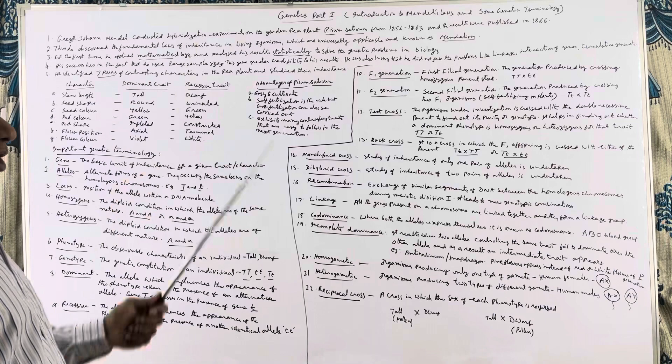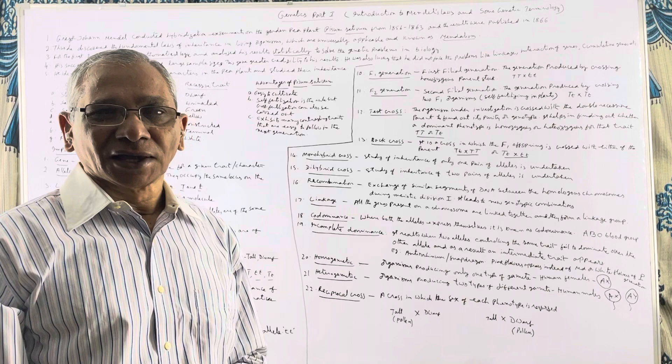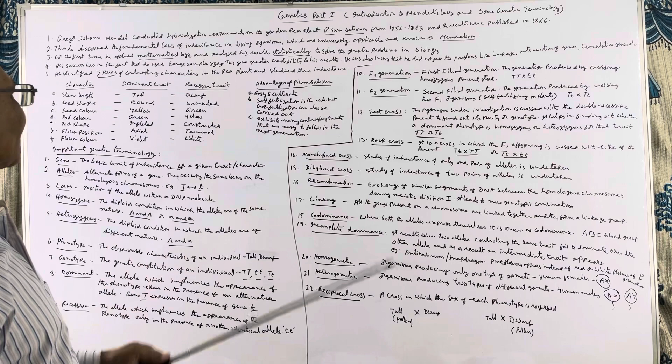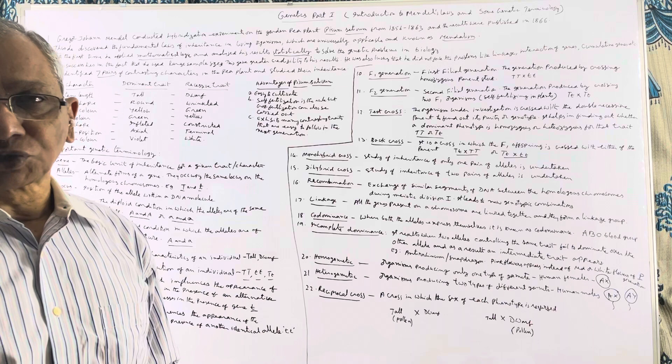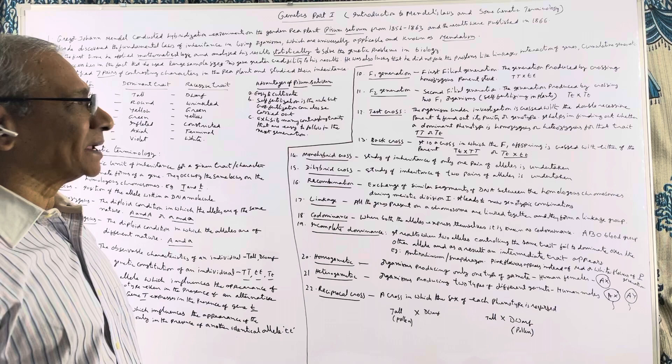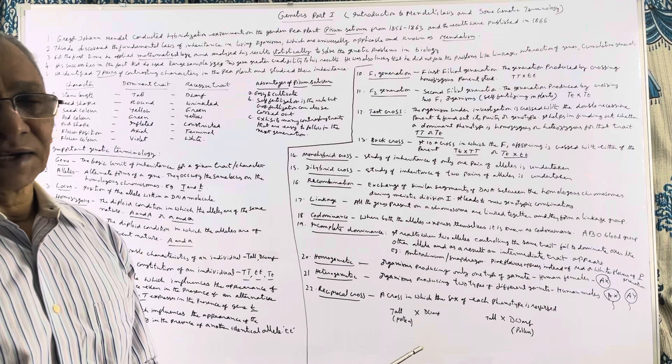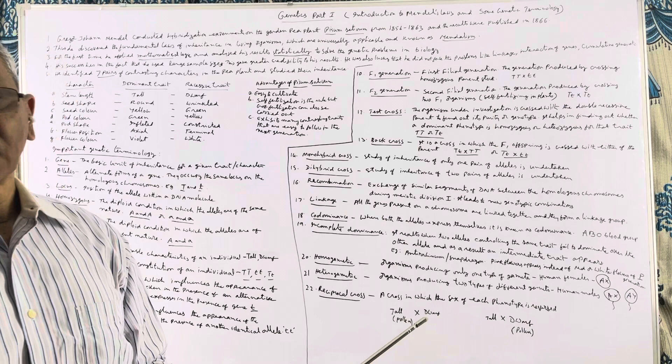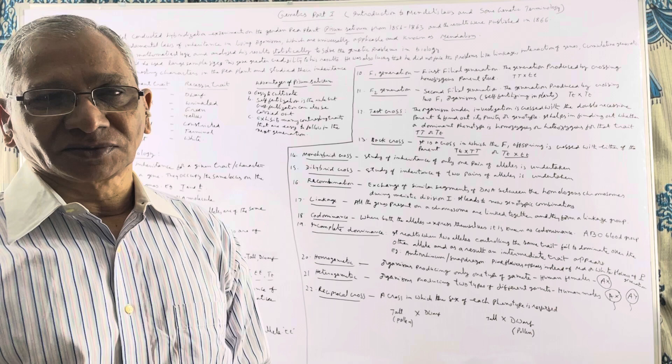We have to remember Gregor Johann Mendel, an Austrian monk. He conducted experiments known as hybridization experiments on a plant known as Pisum sativum, commonly known as garden pea. His experiments were conducted from the year 1856 to 1863, and his results were published in the year 1866.